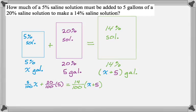The easiest thing to do is multiply through by 100 to clear it out. So I get 5x plus 100 equals 14 times the quantity x plus 5.